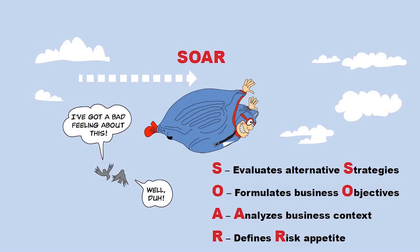The S in SOAR is strategies — evaluate alternative strategies. The O is objectives — formulate your business objectives. The A is to analyze the business context. And then the R is to define that risk appetite.